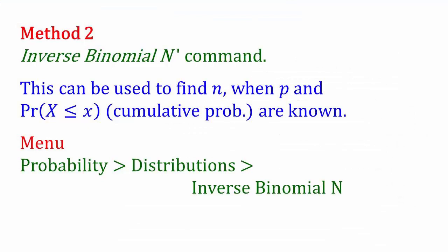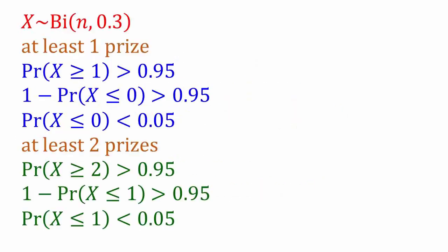The other method we can use now with the new operating system is inverse binomial N, and N is the key, but you want to use this when N is the unknown. This can be used to find N when P and the cumulative probability are known. In the menu, it's probability distributions, look for inverse binomial N. This requires a bit more thinking, though, because the cumulative distribution is from X less than or equal to a value.